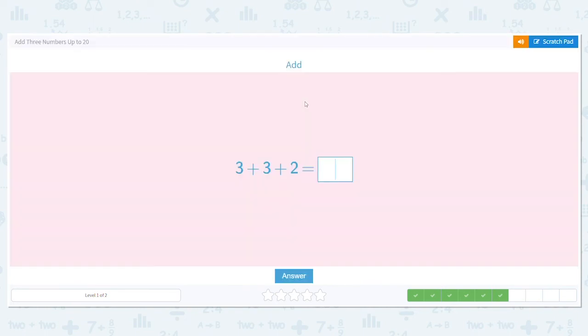How about this one? Three plus three plus two. Do I see any doubles? I do. I see a three and a three. What is three plus three? Three plus three equals six.